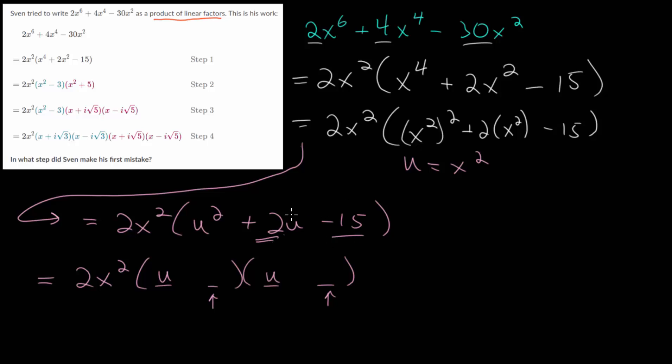From here, we just need to figure out these constant terms. We know they will multiply to negative 15 and add to positive 2. So let's think, which numbers multiply to negative 15? We could have minus 1 and 15, minus 15 and 1, minus 3 and 5, or minus 5 and 3. You can notice that minus 3 and 5 makes sense, because those actually add to 2. So let's plug those in. We have u minus 3 and u plus 5. We can always test this by just re-multiplying it back out, and you will see that you end up with this quadratic expression.